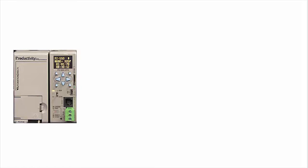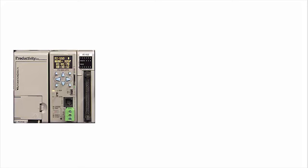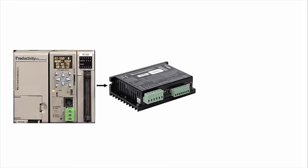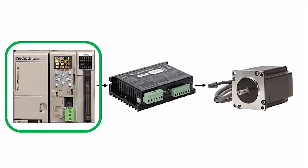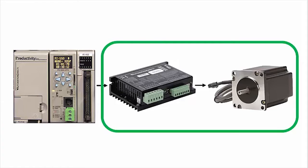Suppose you have a Productivity Series controller with a high speed output module that is driving a stepper drive, which is controlling a stepper motor, and that stepper motor isn't reacting to the commands you are sending it from the ladder code in the controller. With so many active components in the chain, where do you start when the motor doesn't react? Is it your code or is it one of the electronic components?